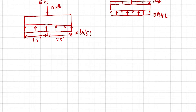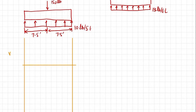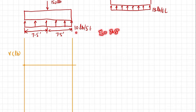This is our final diagram, and based on this loading we will draw the shear force and bending moment diagram. For the shear force diagram in pounds: from x equals 0 to x equals 7.5 there is a distributed load of 10 pounds per feet. At x equals 0, shear force V equals 0. At x equals 7.5, the shear force equals 10 times 7.5 which equals 75 pounds upward.